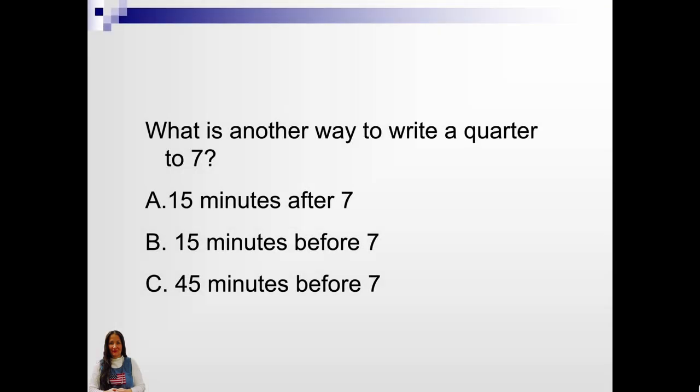What is another way to write a quarter to 7? A. 15 minutes after 7. B. 15 minutes before 7. Or C. 45 minutes before 7. B. 15 minutes before 7. Every quarter in a clock is 15 minutes.